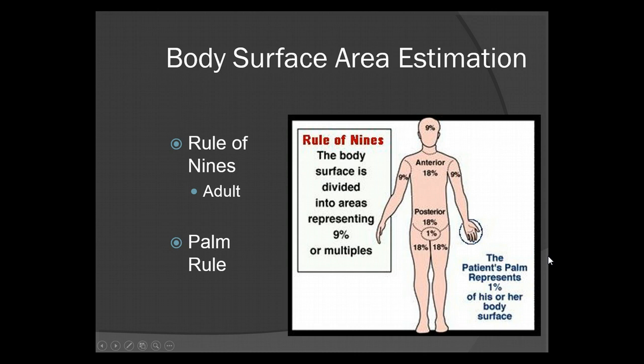Now we're going to look at BSA, or body surface area estimation. In the field we generally use the rule of nines, where the body surface is divided into areas representing 9% or multiples of 9. The head is 9%, each arm is 9%, the anterior trunk is 18%, the posterior trunk is another 18%, each leg is 18%, and 1% for the groin — though the groin is also one of the more critical areas if there's a burn involved.